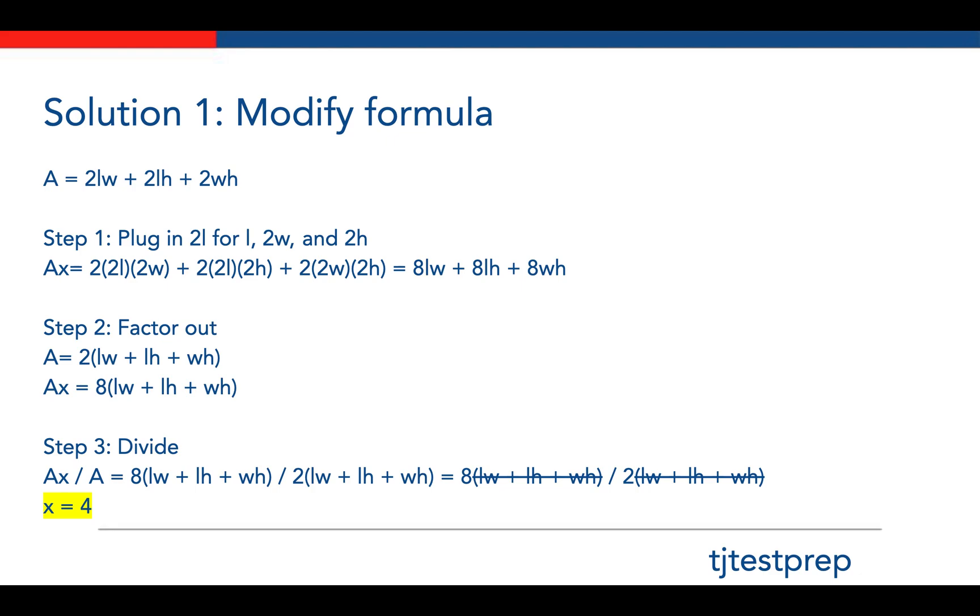So A times some number X is 2 times 2L times 2W plus 2 times 2L times 2H plus 2 times 2W times 2H. We have to plug in 2L for the original L, 2W for the original W, and 2H for the original H. After we plug in those variables, we finally get the formula which is 8LW plus 8LH plus 8WH.